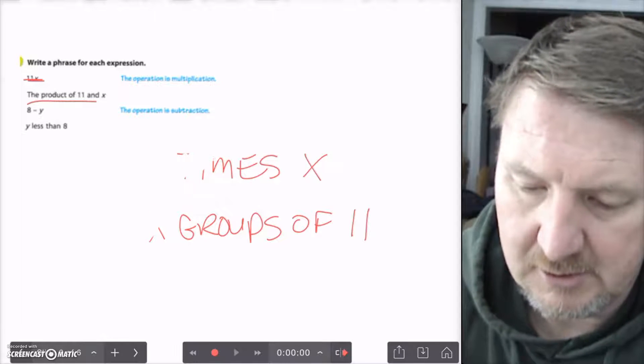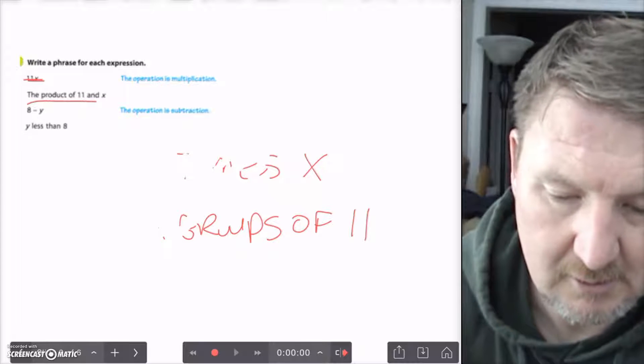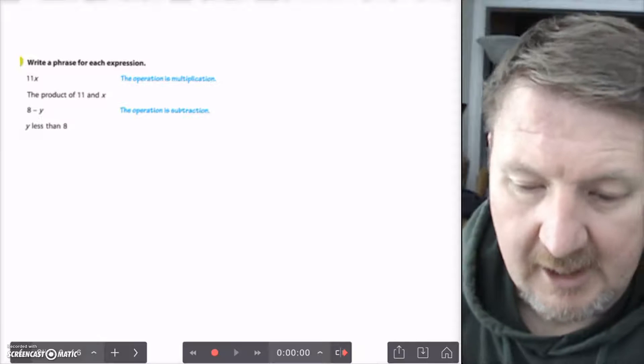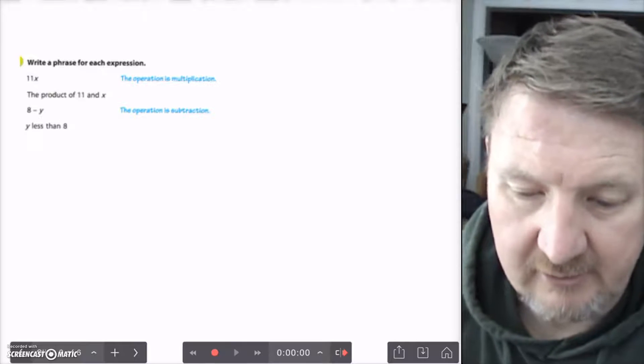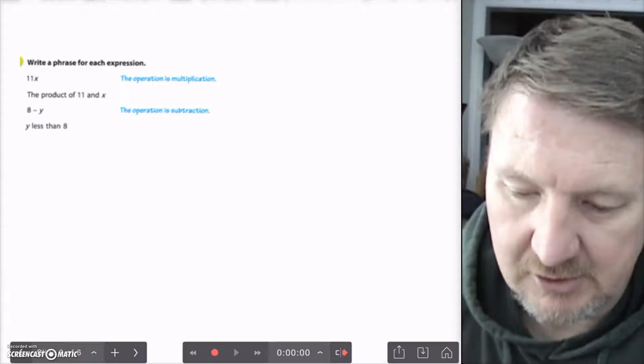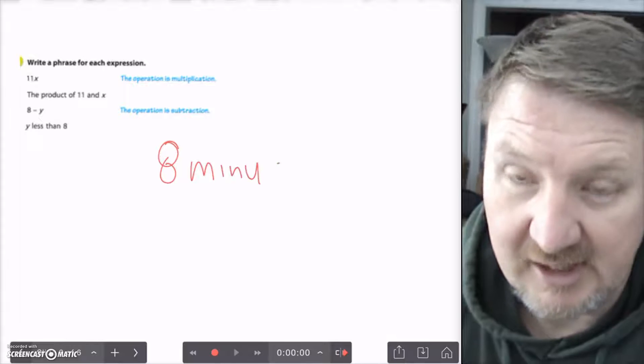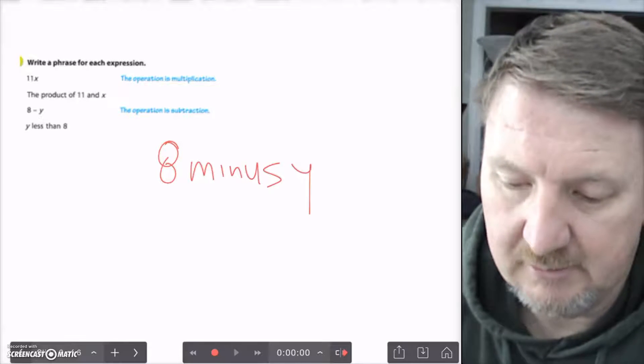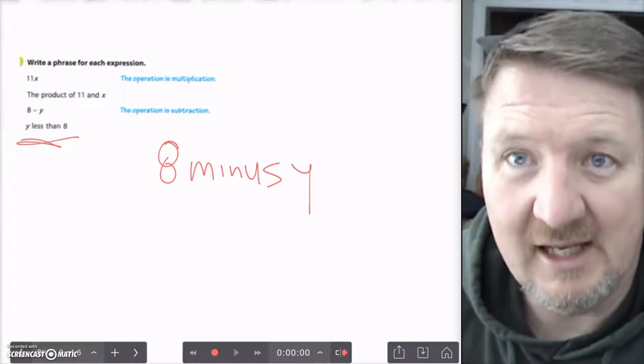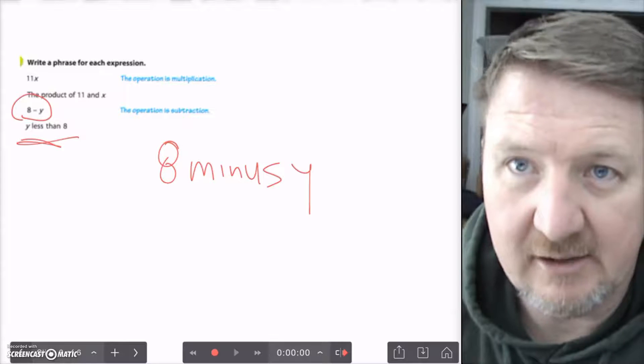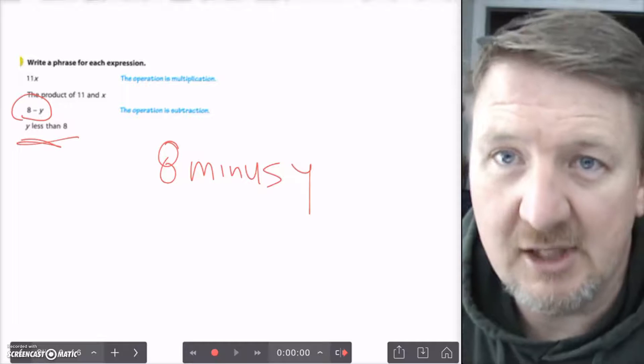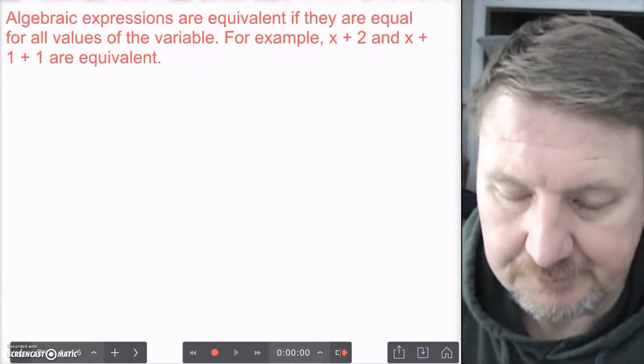Let's erase this real quick. And then we have 8 less than y, or 8 minus y. So, you can say 8 minus y - that's probably the easiest one to do. Or you can say, like it has here, y less than 8. Now, it changes the order when you're talking about it like that, though. Because it's y less than 8. So, that means you start with 8, and you take y away from it.